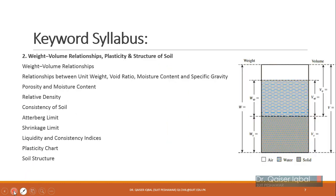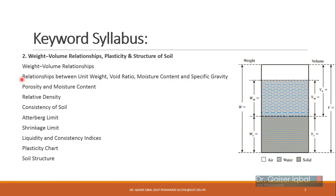Then we will move on to weight-volume relationships. The weight of the soils is related to the volume of the soil as well. Soil is basically referred to as a three-phase medium comprising solids, water, and air. The weights can be easily related to the volumes, so we will determine various relationships — if you have one property, you can calculate another. For example, if you have the weight of water, you can determine the volume of water, because volume in the soil is not directly measured.